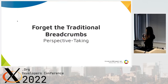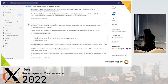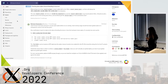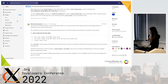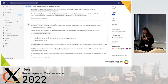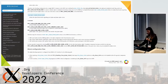Forget the traditional breadcrumbs for a moment — you need to take an alternative perspective. I introduce you to the new Stack Overflow: the AMD issue tracker. In one issue I found valuable information for debugging related to DRM alpha blend mode, and I was also able to enable another blend mode that was not previously supported by the driver.